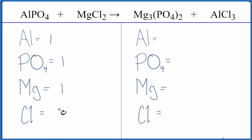We have one magnesium and two chlorine atoms. On the product side we have the one aluminum, we have the two PO4s, the phosphates, three Mg's, and three chlorine atoms.